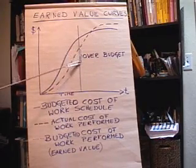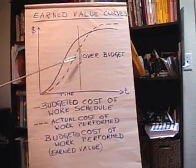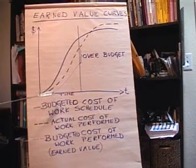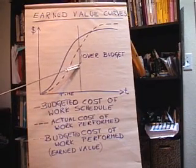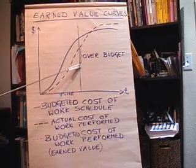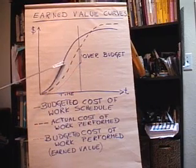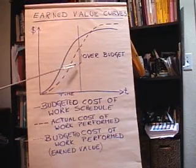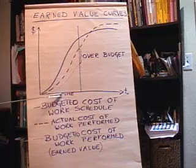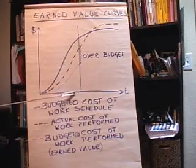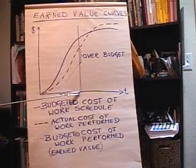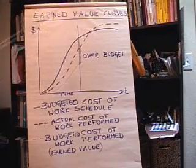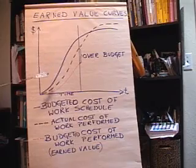The second thing we can see, besides whether we're above or over budget, is whether we're ahead or behind on the project. You can see here that we're actually behind, because our earned value according to the budget is at this level, but we should have had that level back here in that earlier time period. The amount that we're behind is the difference on the time axis between those two points. So depending on the relationship of these three curves, you can answer the two questions: are you over or under budget, and are you ahead or behind on your project?